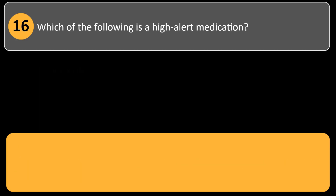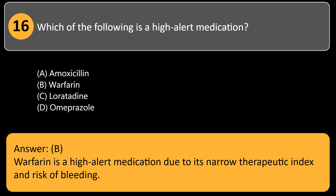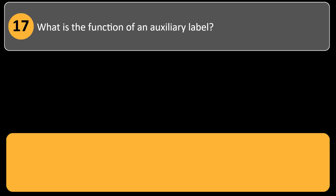Which of the following is a high-alert medication? A) amoxicillin, B) warfarin, C) loratadine, D) omeprazole. Answer: B. Warfarin is a high-alert medication due to its narrow therapeutic index and risk of bleeding.